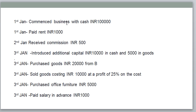Every transaction has two kinds of accounts or more. For example, commencing business with cash — which account should be debited and which account should be credited, that is very important. Journal contains date, amount, debit, credit, and accounts. The format I will explain in the next session. This is just a basic analysis of how we can understand accounting.